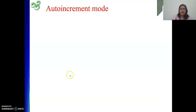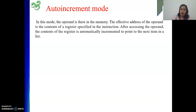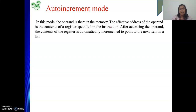The next is auto increment addressing mode. In this mode, the operand will be in memory. The effective address of the operand will be the content of a register specified in the instruction. This is kind of similar to register indirect, because in register indirect also, the address of the operand is part of a register. Data is in memory, address is in a register.